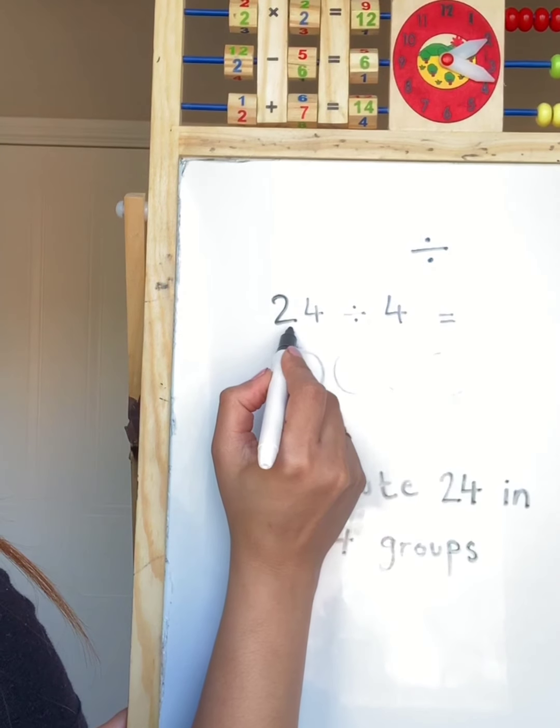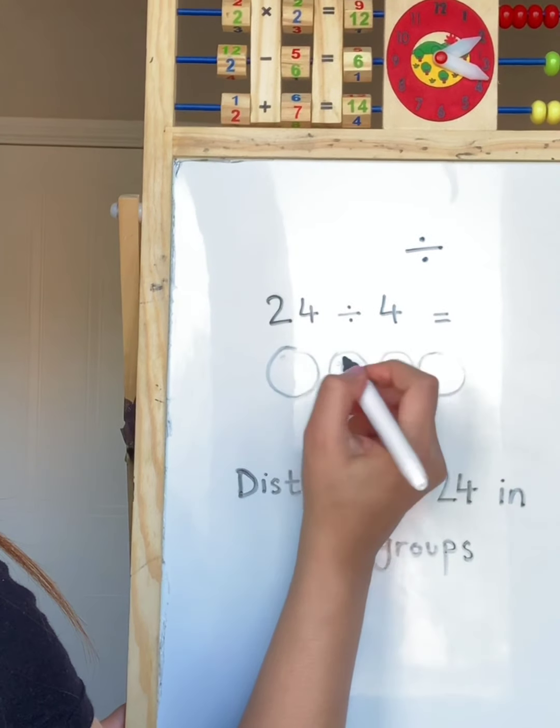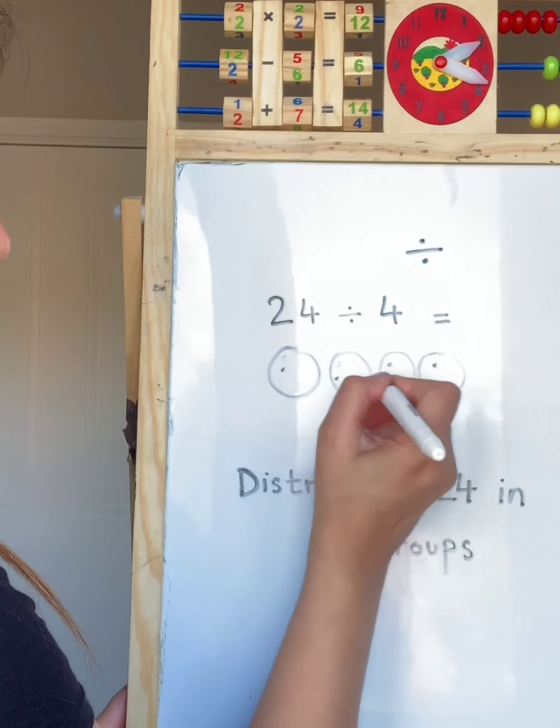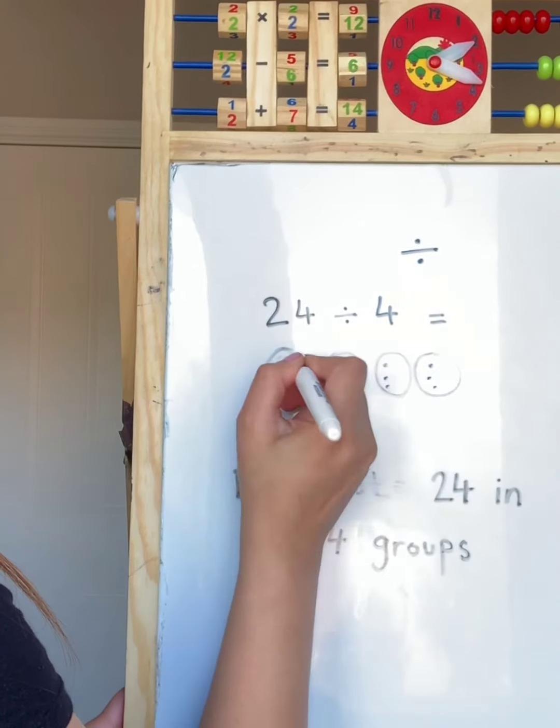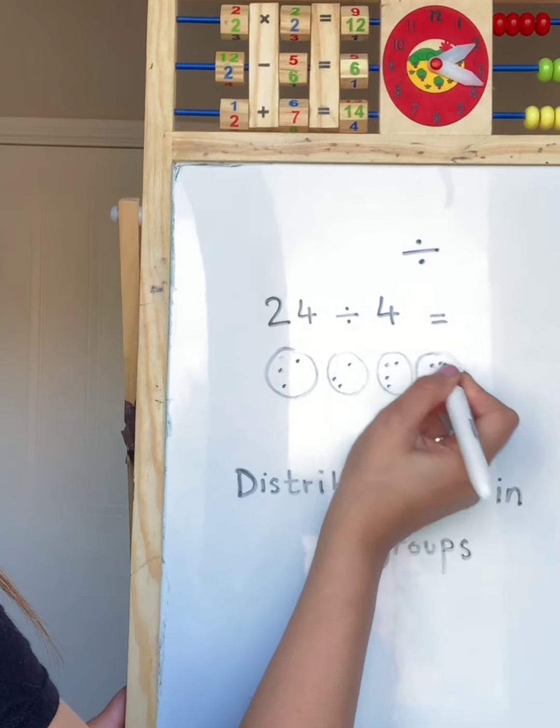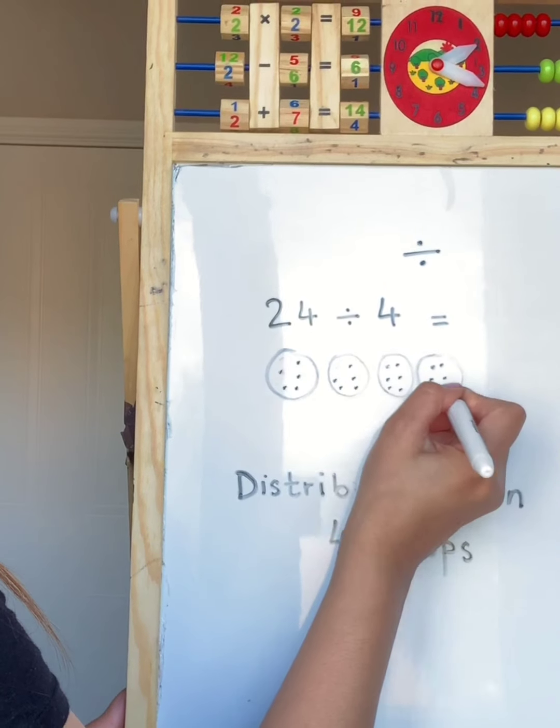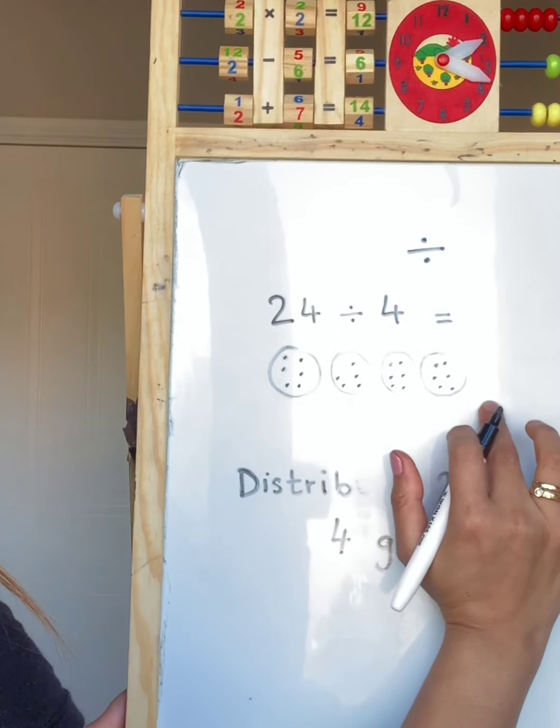I'm going to start sharing the sweets among the 4 friends. 1, 2, 3, 4, 5, 6, 7, 8, 9, 10, 11, 12, 13, 14, 15, 16, 17, 18, 19, 20, 21, 22, 23, 24. I've shared 24 with 4 friends.